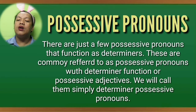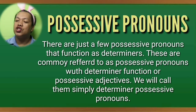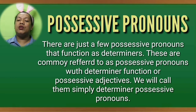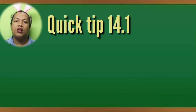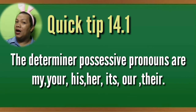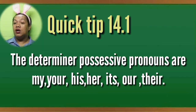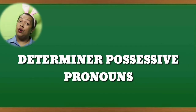There are just a few possessive pronouns that function also as determiners in the sentence. These are referred to as possessive pronouns with determiner function, or possessive adjectives. We will call them simply determiner possessive pronouns. Cambridge English Grammar Quick Tip 14.1 lists the determiner possessive pronouns as: my, your, his, her, its, our, and their.